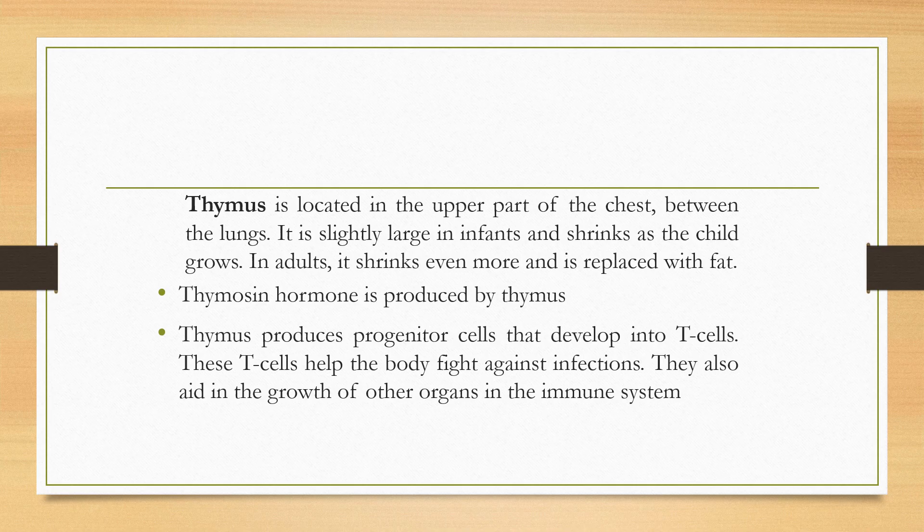The thymus gland lies in the lower part of the neck and upper part of the chest, between the lungs. It is slightly larger in infants and shrinks as the child grows. In adults, it shrinks even more and is replaced with fat. The hormone it releases is thymocin. The thymus produces progenitor cells that develop into T cells, which help the body fight against infections and aid in the growth of other organs in the immune system. So the thymus gland plays a role in the development of the immune system and is large in young children but shrinks after puberty.